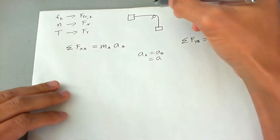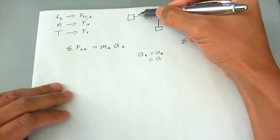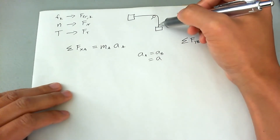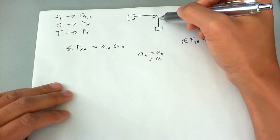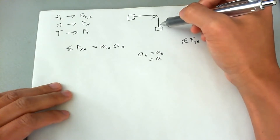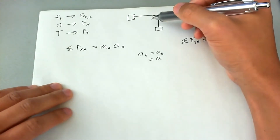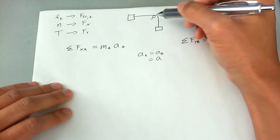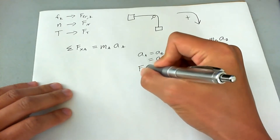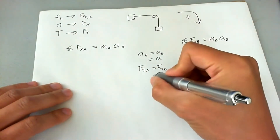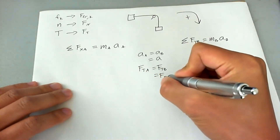This is one rope, so the tension felt by block A due to the rope has to be the same as the tension felt by block B. This assumption applies to anything connected by a perfect rope that's not elastic and has no impurities — perfectly stiff, perfectly transferring forces. So the force of tension on block A equals the force of tension on block B, and we'll just call it the force of tension.